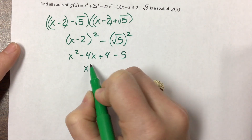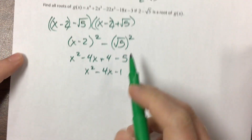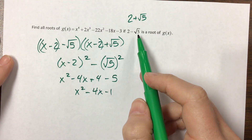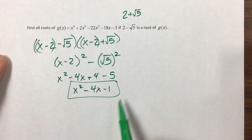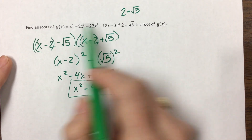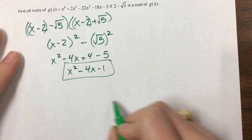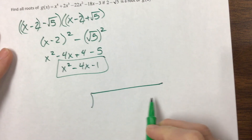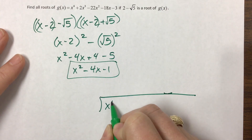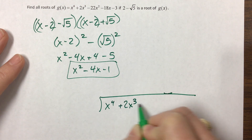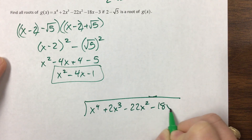That gives me x squared minus 4x minus 5. So if they're telling me that this is one of the roots, then I know that this polynomial — that quadratic — is going to divide evenly into this quartic. Since it's a quadratic, I'm not going to do synthetic division. I'm going to do long division, and I have x to the fourth plus 2x cubed minus 22x squared minus 18x minus 3.